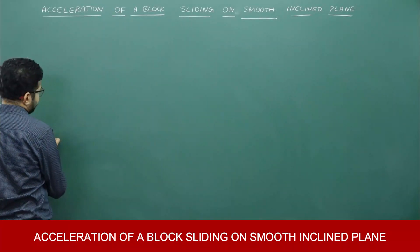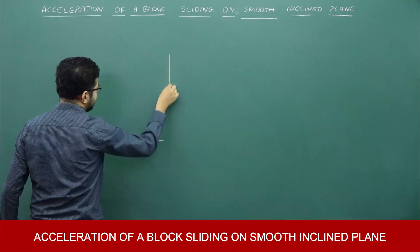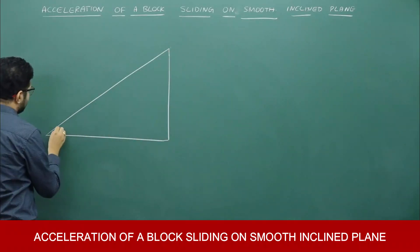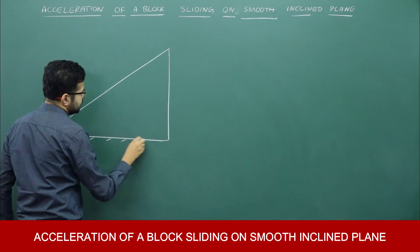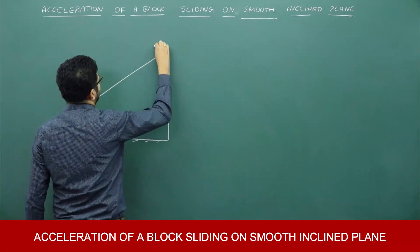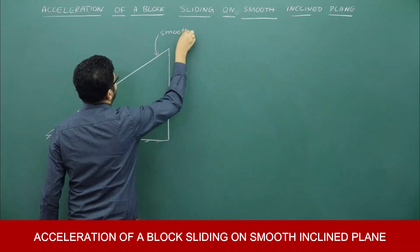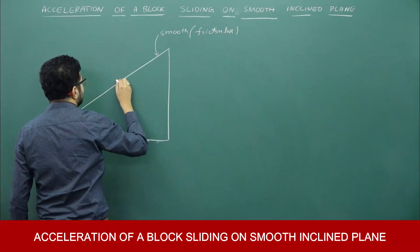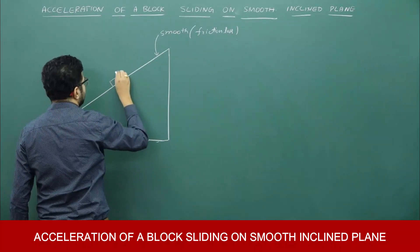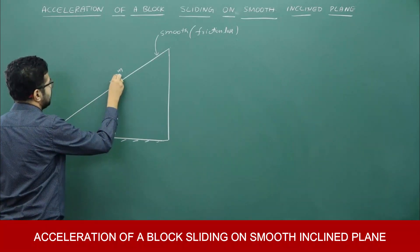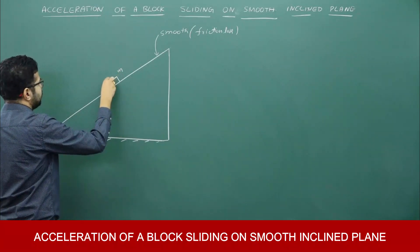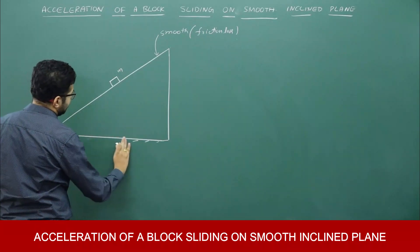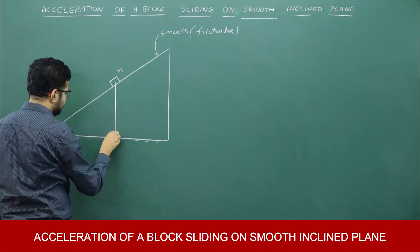Let me consider an inclined plane. The angle of inclination is theta, and this is a smooth inclined plane — smooth means there is no friction, frictionless. A mass is sliding on this inclined plane. Let us see which forces are acting on the mass. One force acting is mg, and mg is acting downwards.